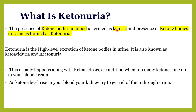When ketone bodies are present in the blood it is ketosis, and when they are present in the urine we call it ketonuria — there is increased excretion of ketone bodies in the urine. It is also known as ketoaciduria or acetonuria, because the three types of ketone bodies include acetone, acetoacetic acid, and beta-hydroxybutyric acid.